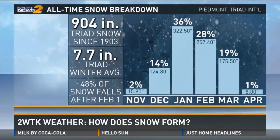According to our average breakdown of snowfall, 48% of snow in the triad falls right now, after February the 1st. So where is the snow?